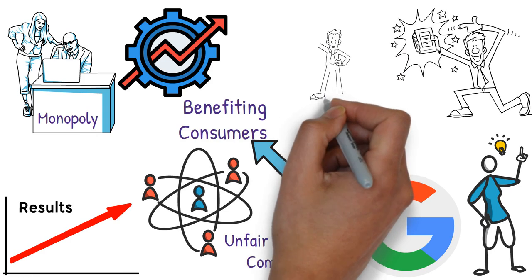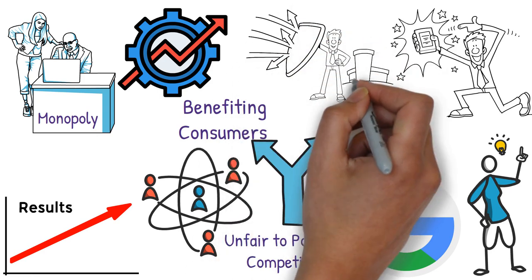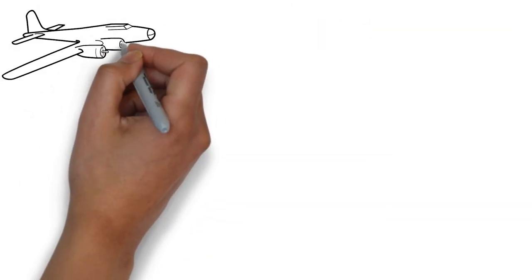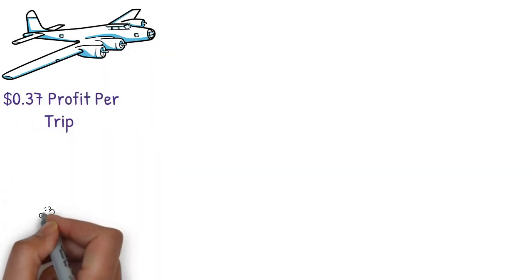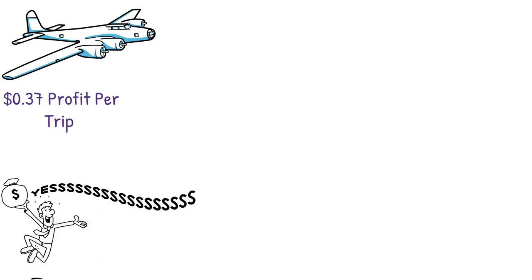Monopolies also shield industries from detrimental over-competition. In 2012, intense airline competition yielded only 37 cents profit per trip, a stark contrast to Google's sizable profit margins.